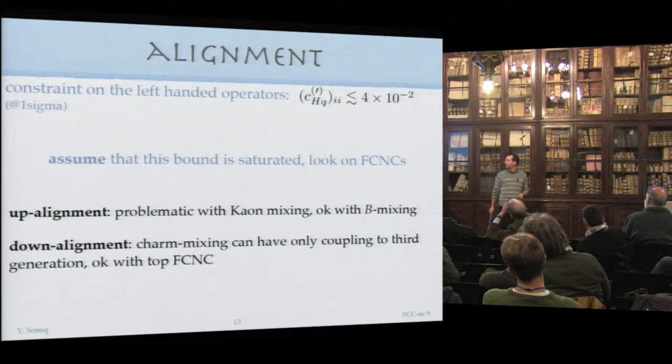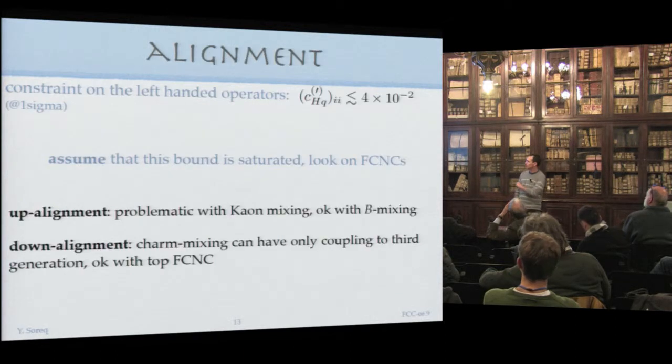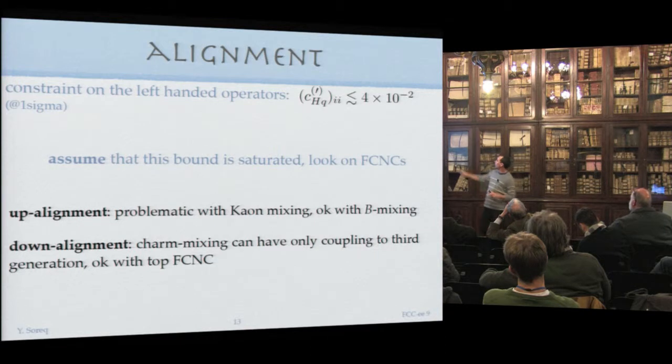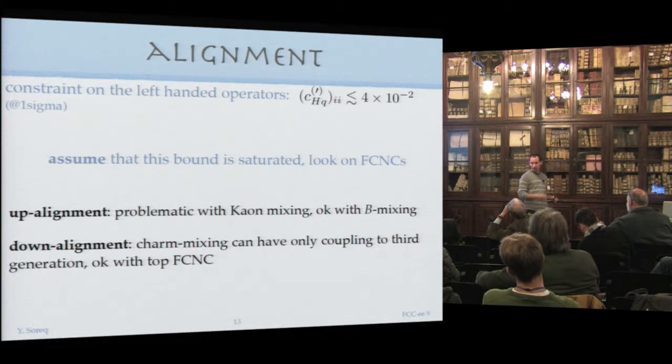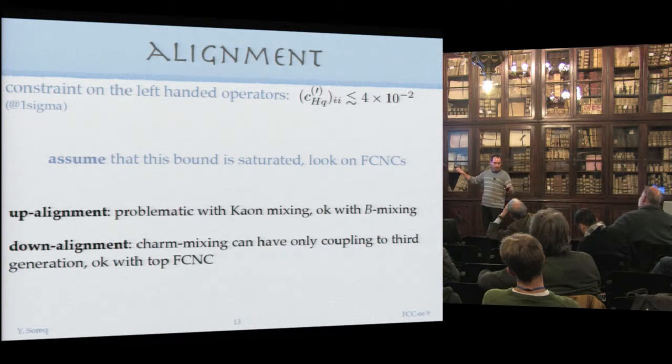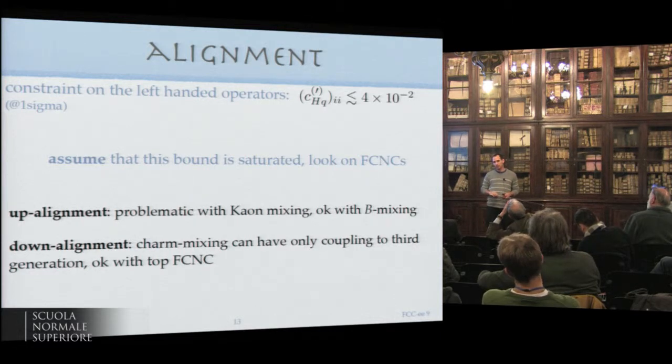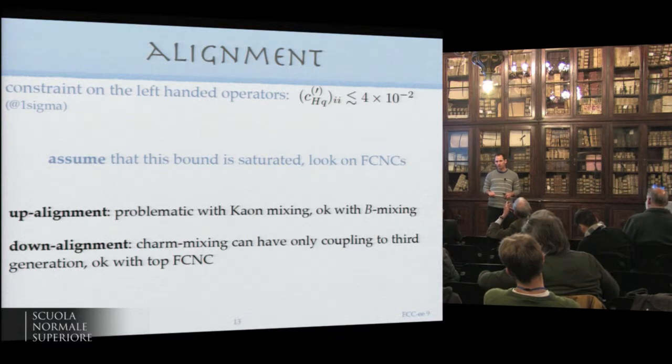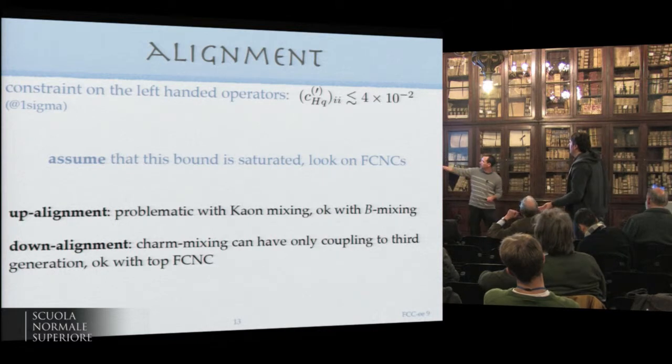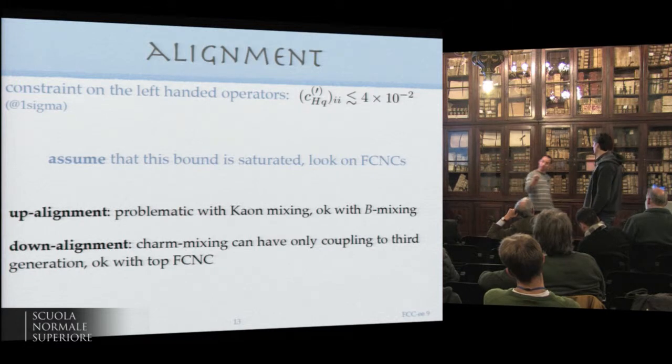The constraint we get on the left-handed operators is roughly at one sigma below 4%. In up alignment we get troubles with CKM mixing and B mixing. While in down alignment, we don't have problems with B mixing or CKM mixing. But char mixing tells us we can only have coupling to the third generation because otherwise we generate char mixing above the experimental bound. In down alignment, flavor dominates as a constraint because char mixing tells us you need coupling only to the third generation.